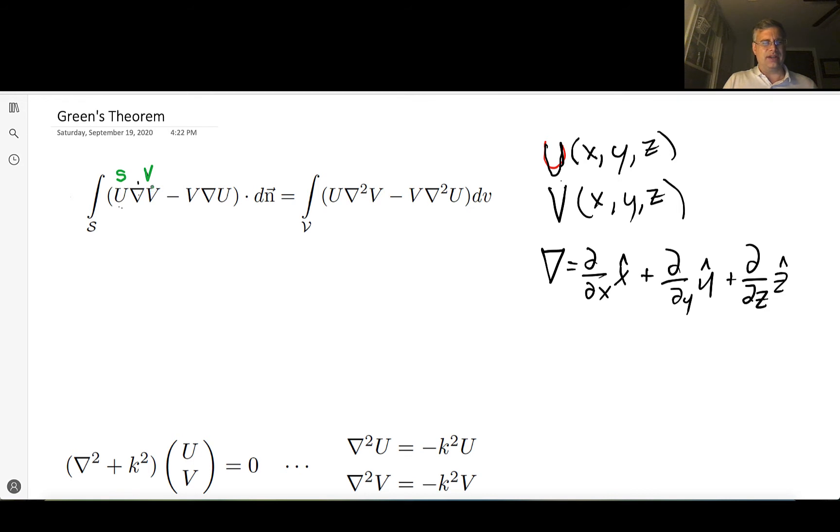You take the gradient of a scalar, you get a vector. Scalar times vector, of course, is going to result in a vector. And same with over here, this is a scalar, this is a vector. The operation of multiplying a scalar on a vector produces a vector.